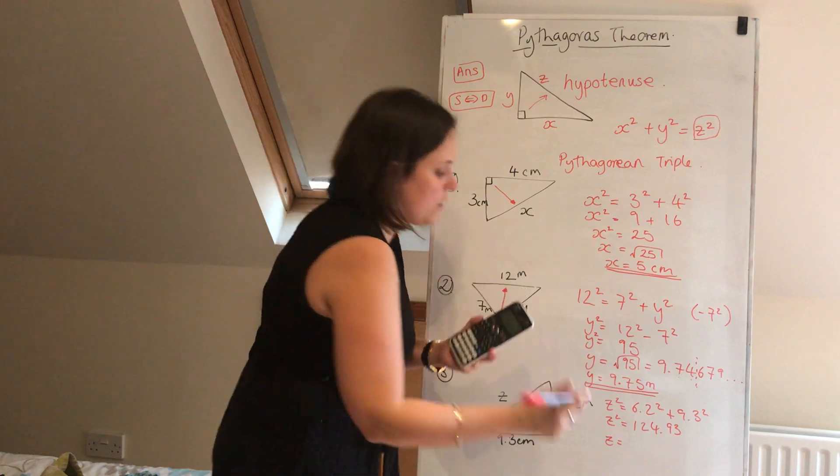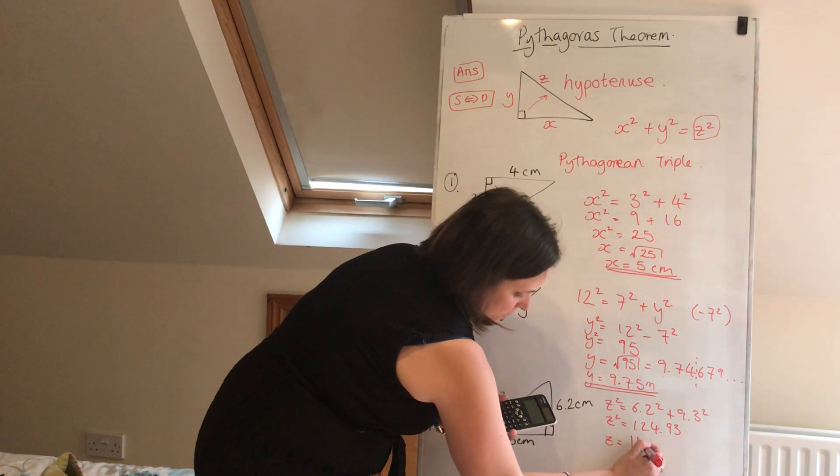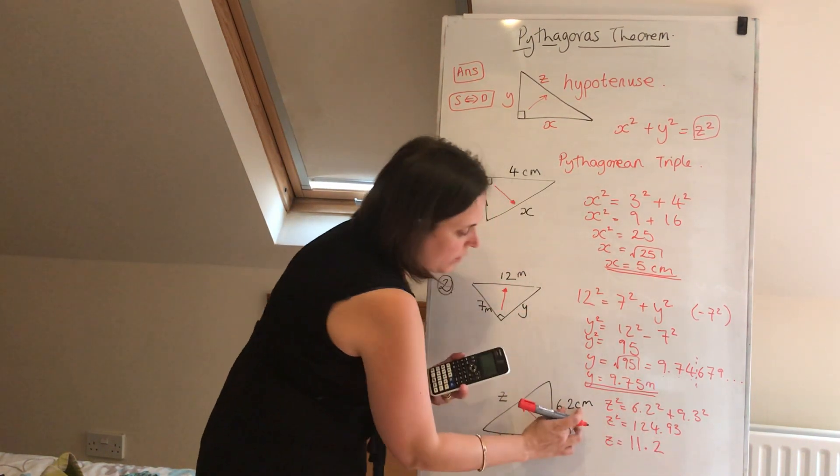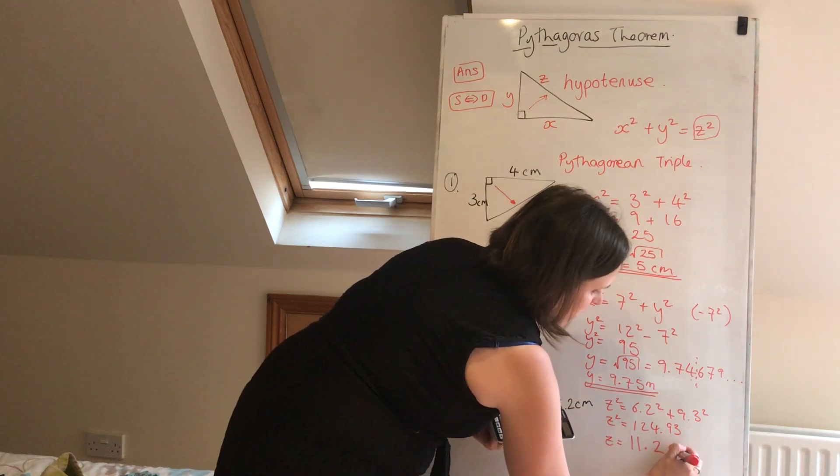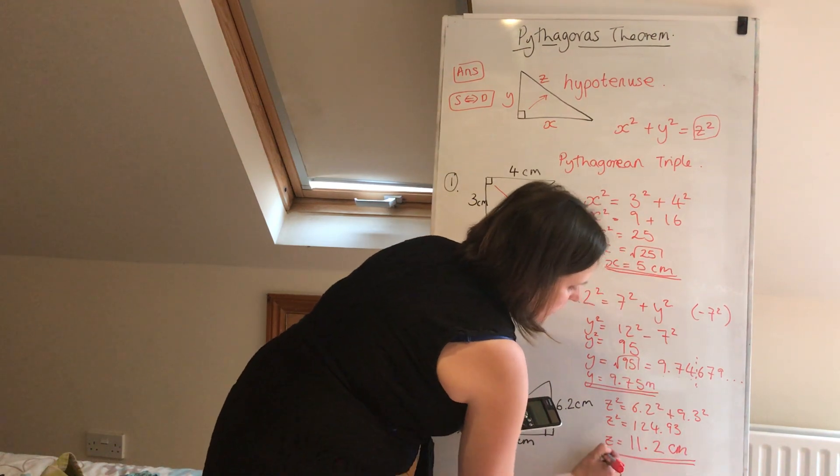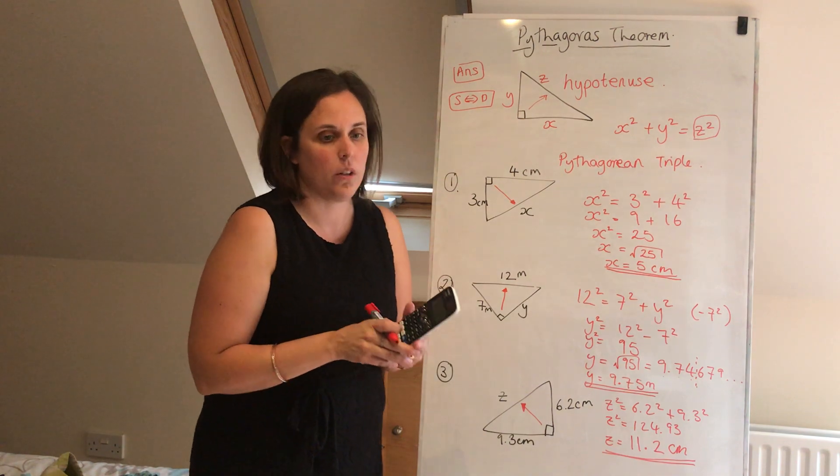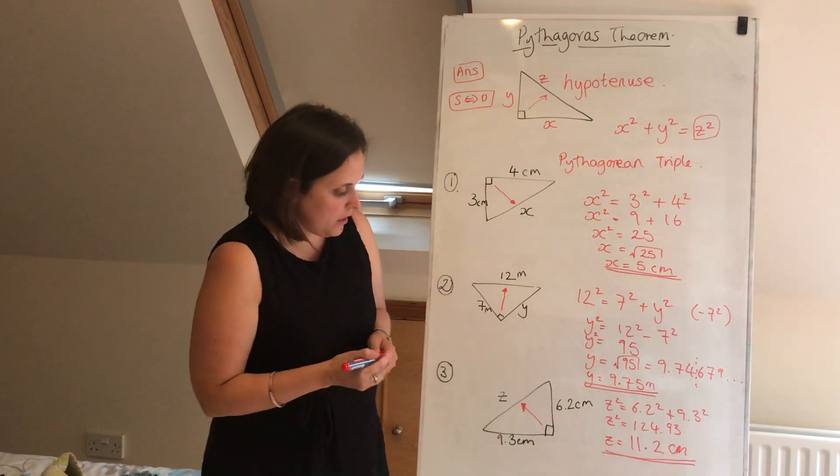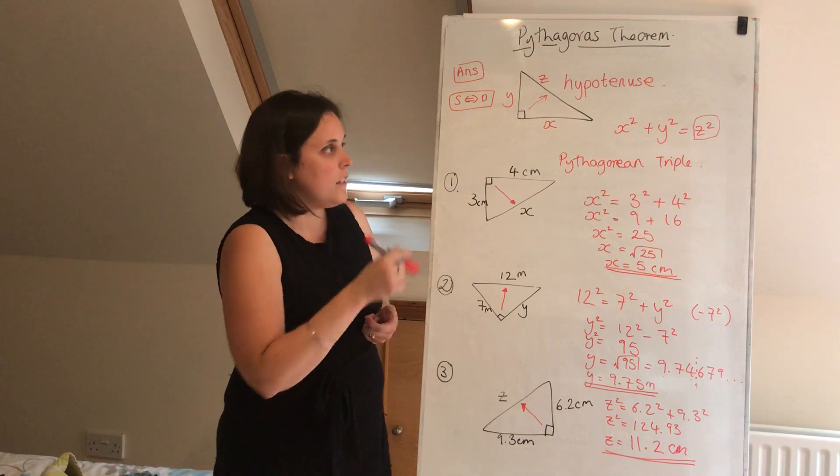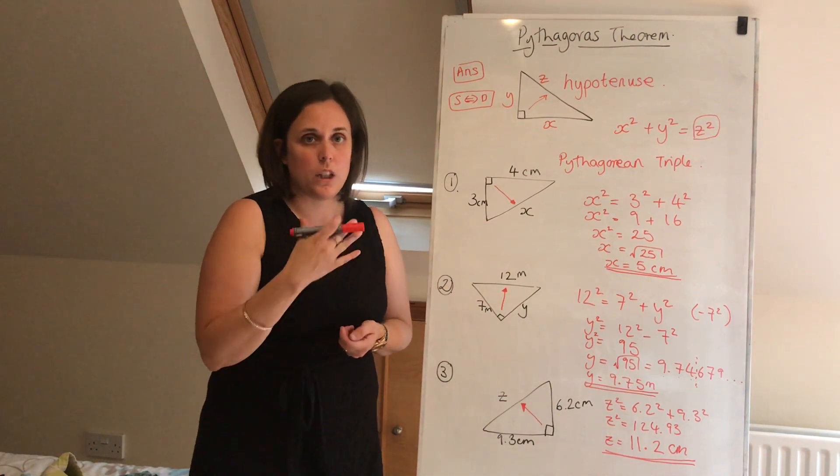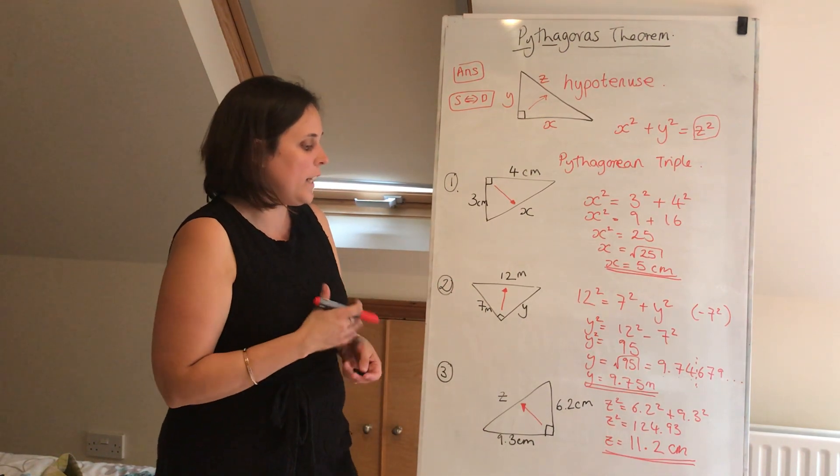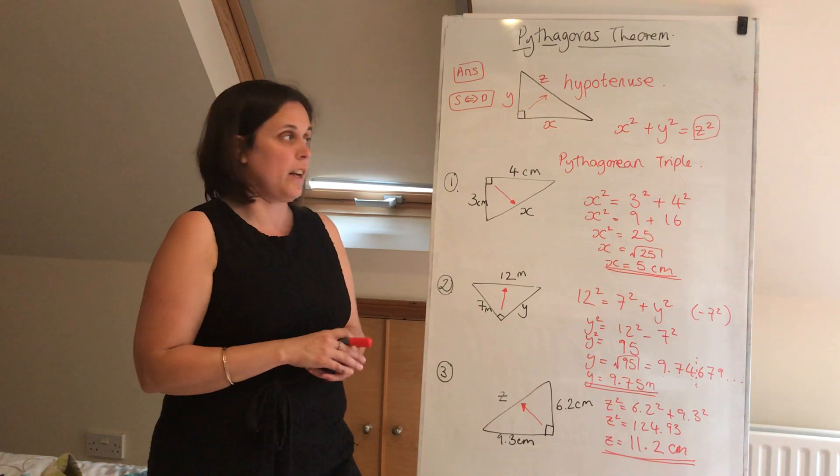Now to three significant figures, I get 11.2, and it's centimeters. It was 11.17, so obviously the seven rounds the one up to two. And that is my final answer. So that's the very simple way that you go through to be able to find the missing side using Pythagoras' theorem.